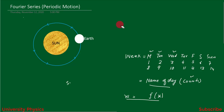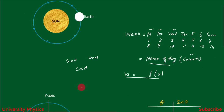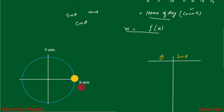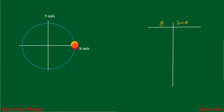In mathematics, sine θ and cos θ are called harmonic functions because they repeat their value after equal intervals of time. For example, consider a particle moving in a circular path.